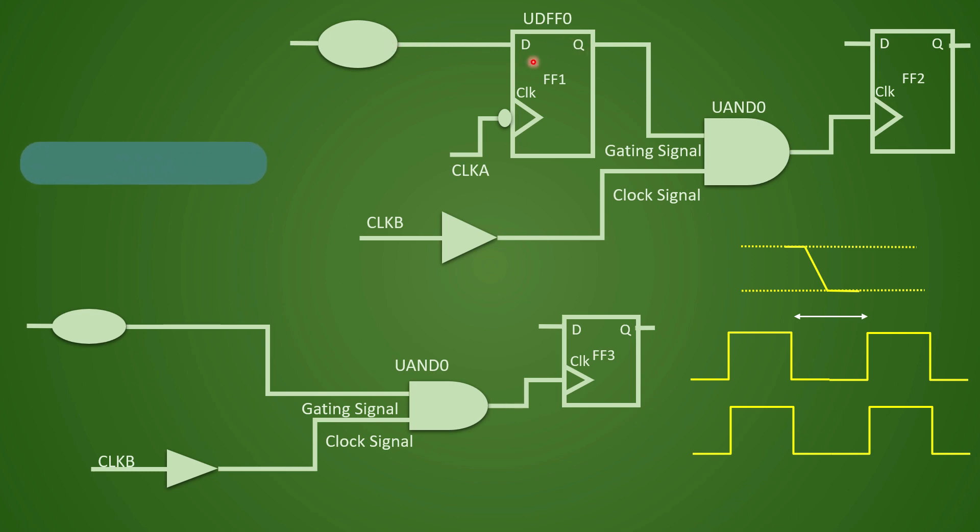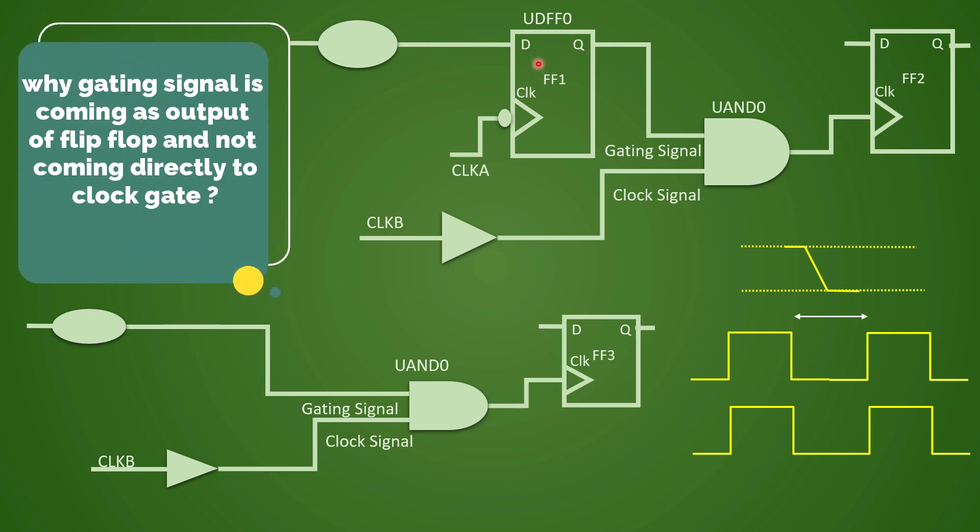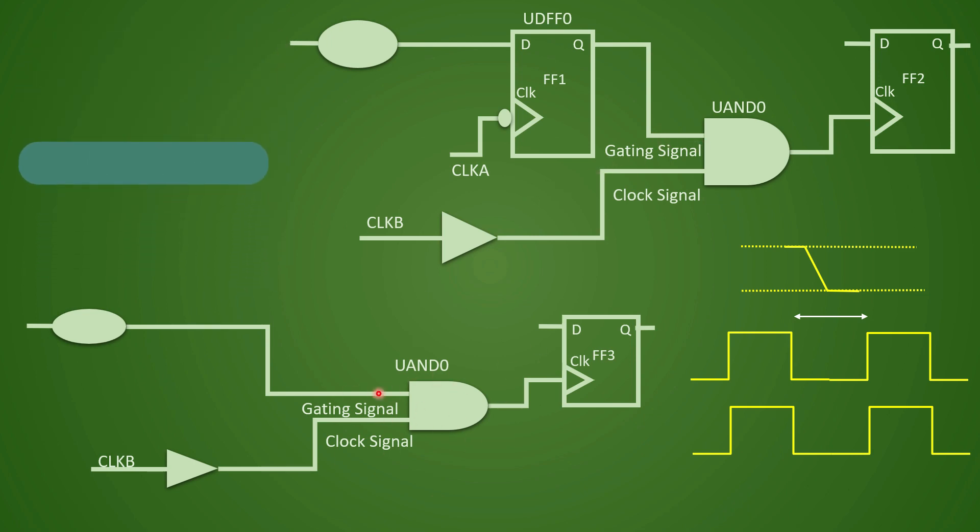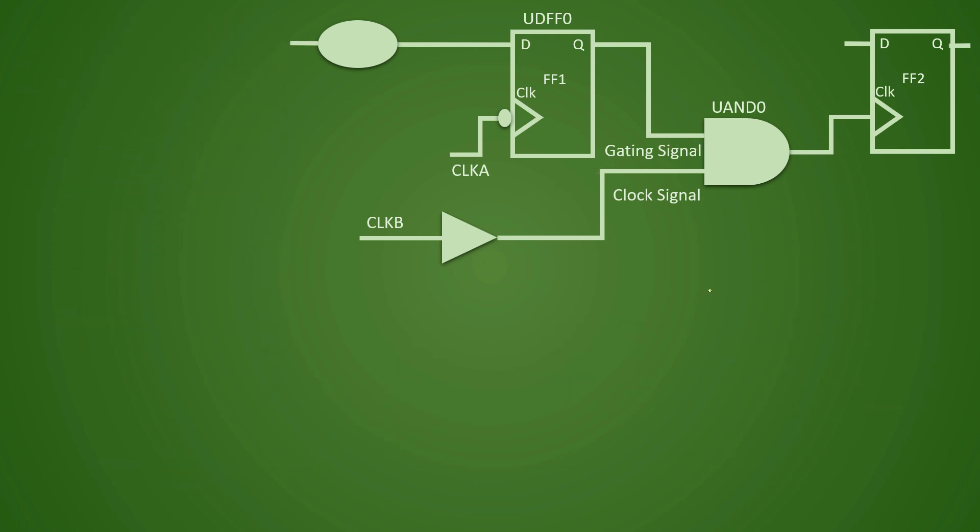Why are we considering this example as a standard example where flip flop output is a gating signal and we are not considering this particular case? Why is that? Let us try to understand the case where gating signal is directly used without any flip flop. Let us take an example to understand this.